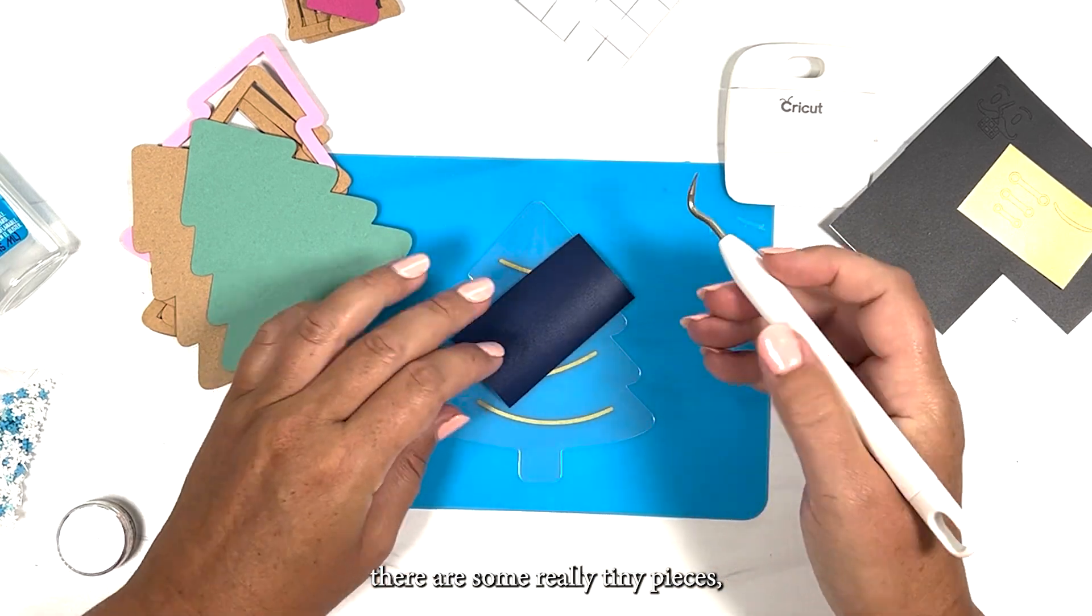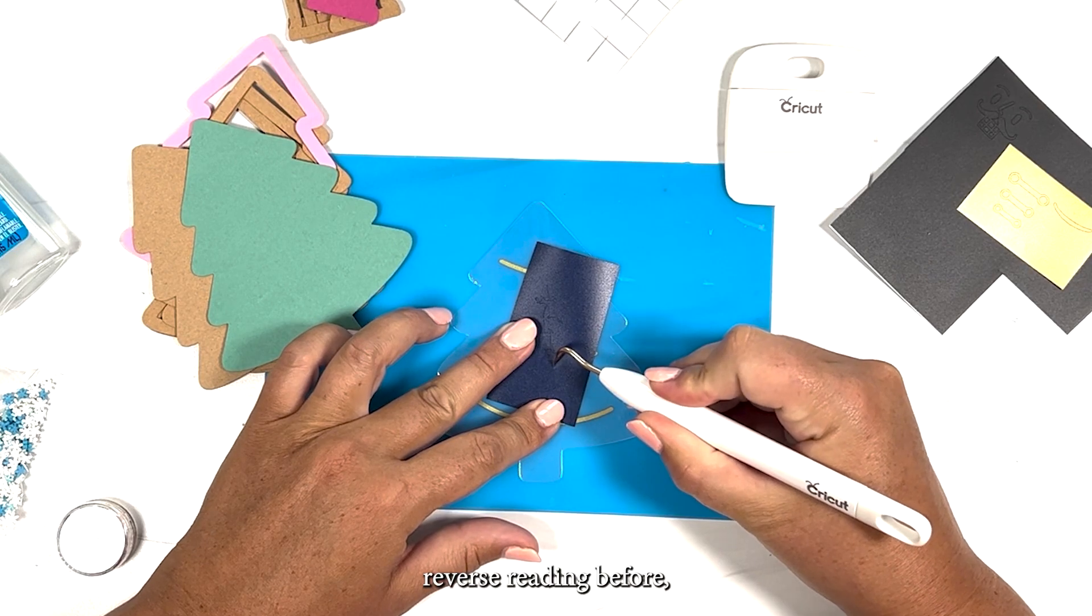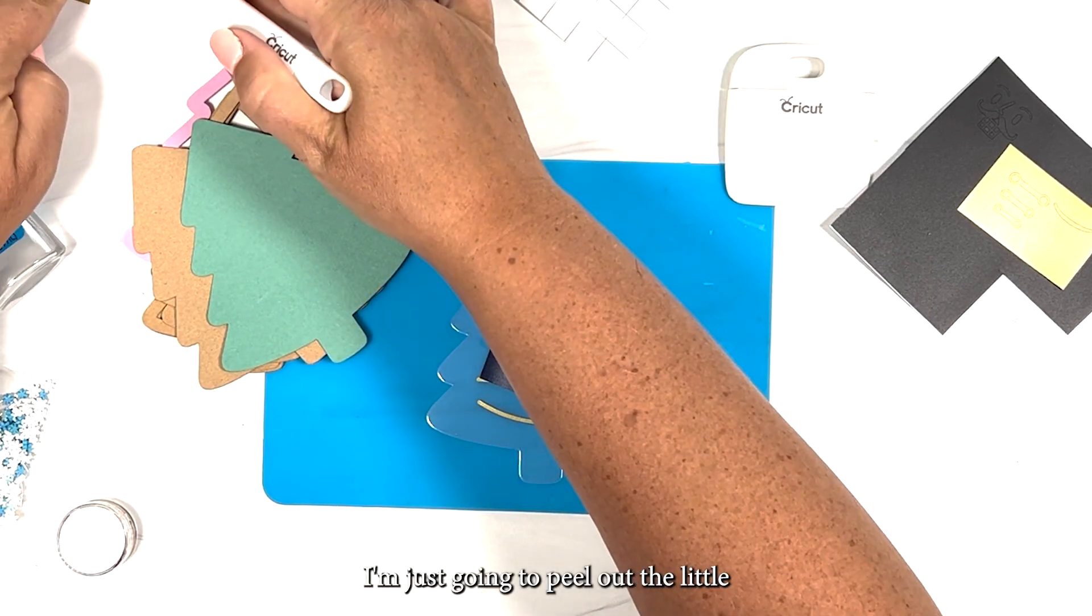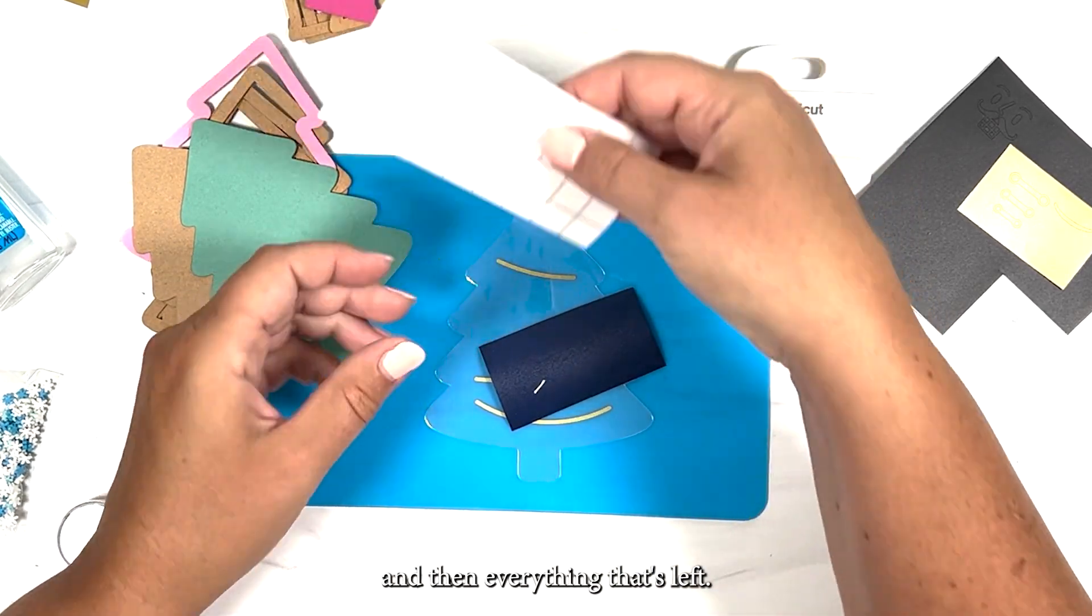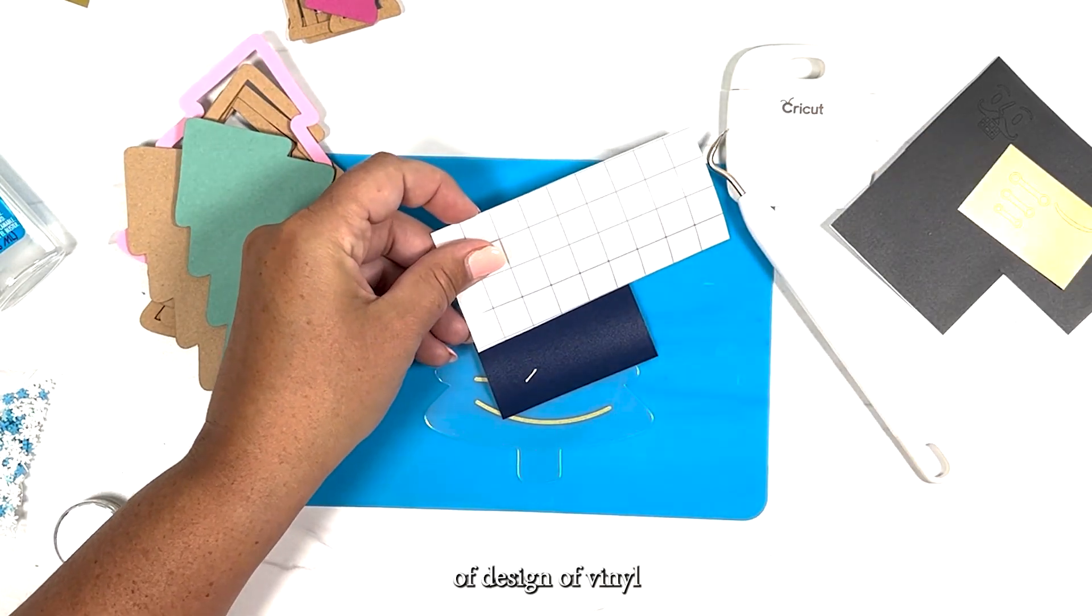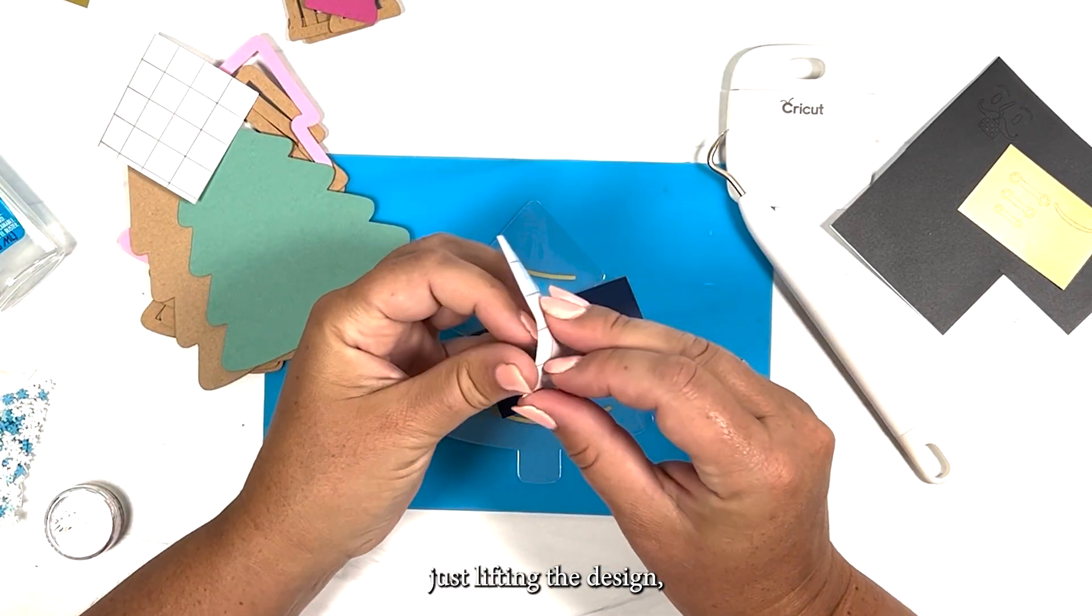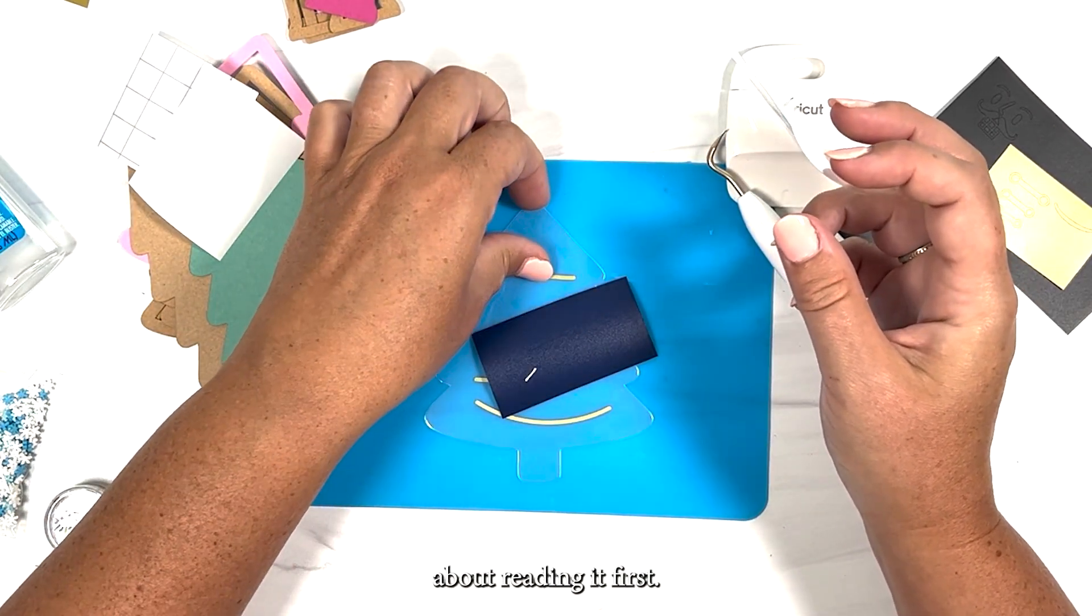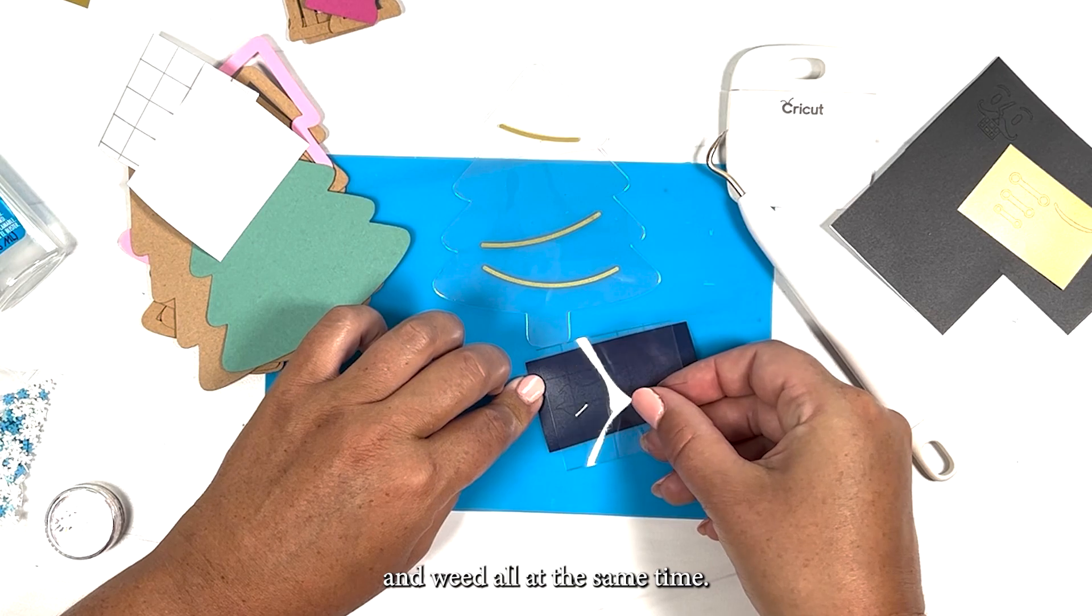For the Santa and sleigh there are some really tiny pieces so I'm going to reverse weed this. If you haven't done reverse weeding before, I'm not going to peel all of the extra vinyl off at first. I'm just going to weed out the little tiny pieces that are there and then everything that's left, I'm going to cover the whole piece or design of vinyl with a piece of transfer tape.